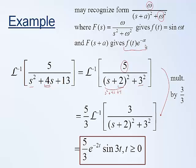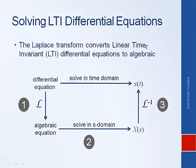This is as we would have predicted: looking at the poles of this Laplace function, the real part is minus 2 and the imaginary part is plus or minus 3j. Now that we understand how to employ the inverse Laplace transform, we can solve differential equations. The approach is: one, apply the Laplace transform to the differential equation to convert it to an algebraic equation; two, solve for X(s); and three, take the solution back to the time domain using the inverse Laplace transform.